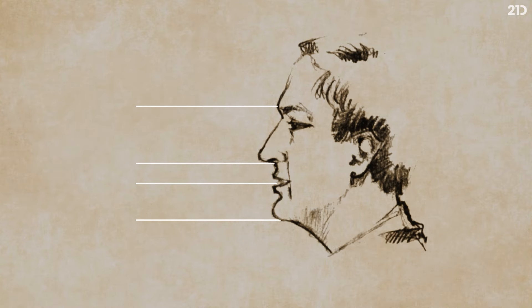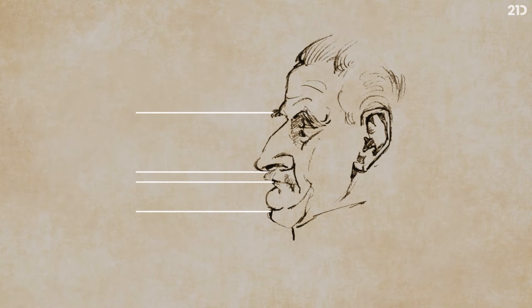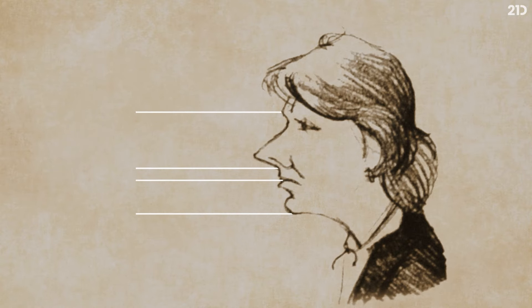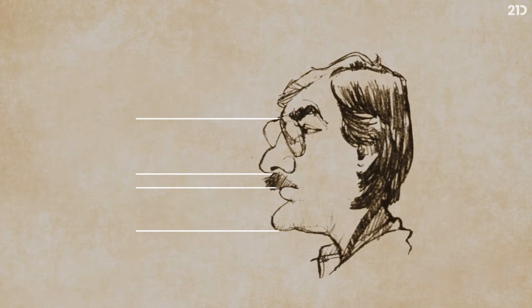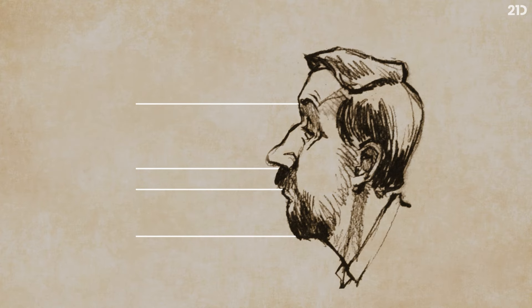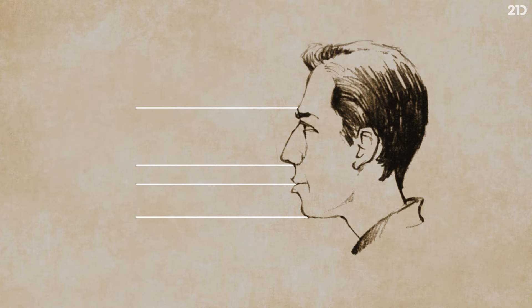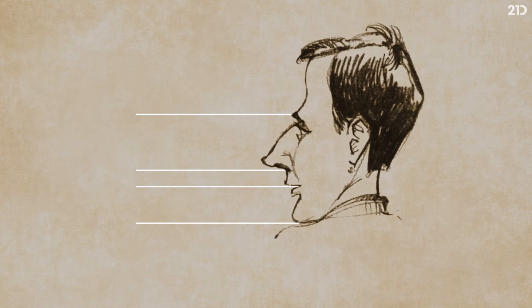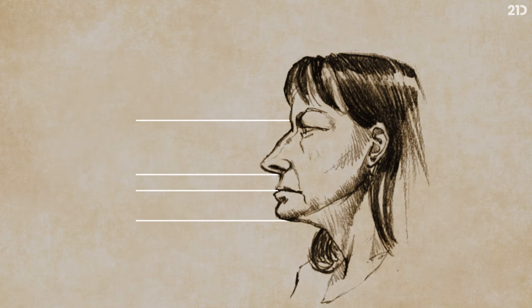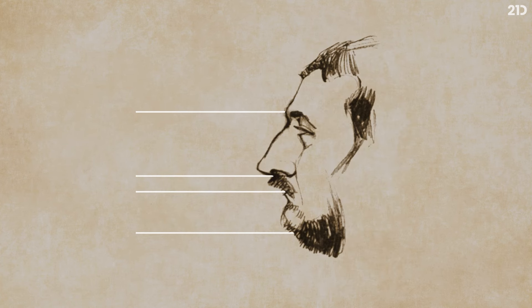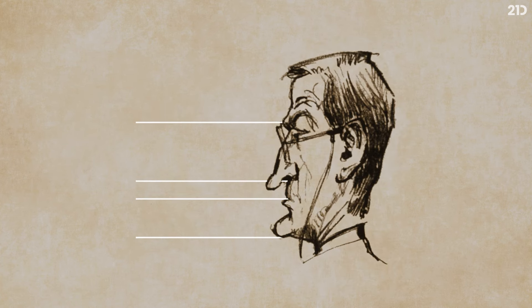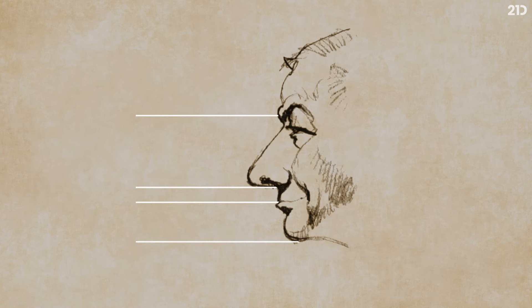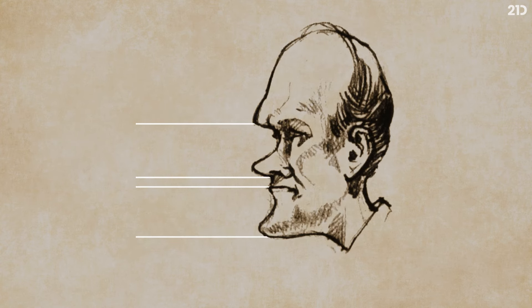Our brains have learned to detect the subtle differences in shapes, sizes, and distances between the various facial features, and recognize each unique combination. In essence, we build up a library of features in our head, and can recognize, say, that someone's nose is bigger or smaller than others, or that their features are more or less symmetrical.